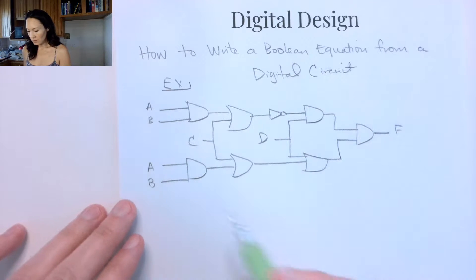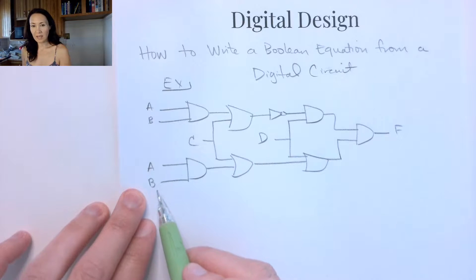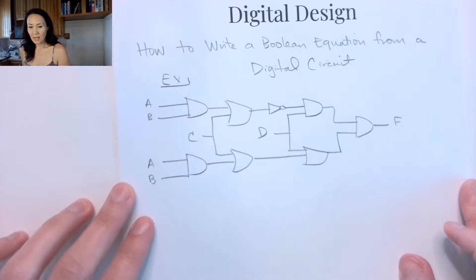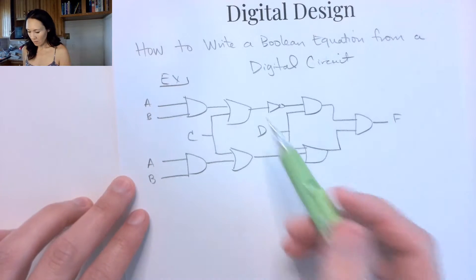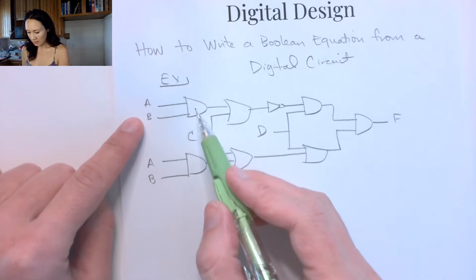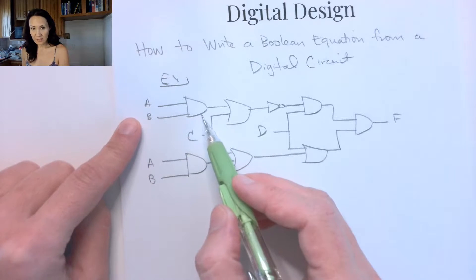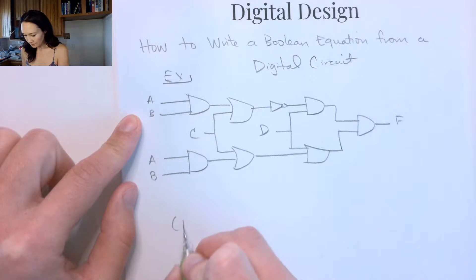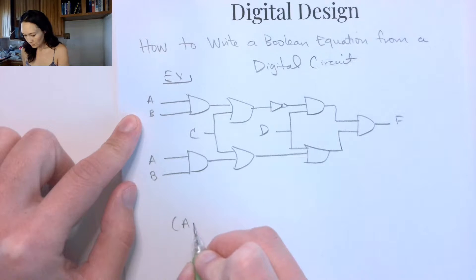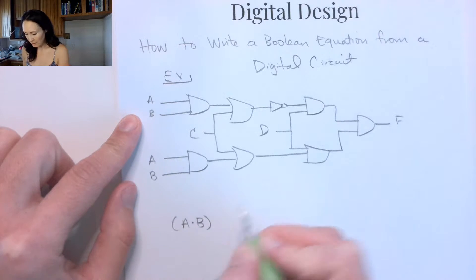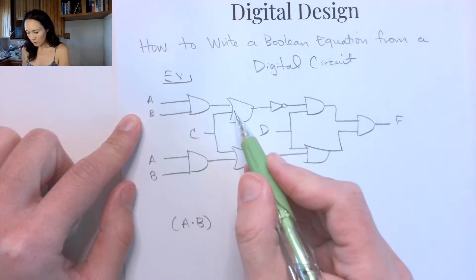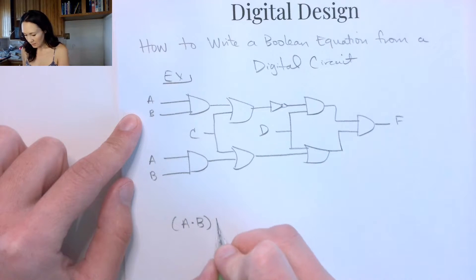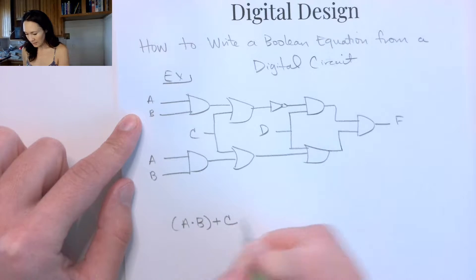To do this, I'm going to start on the left-hand side and work my way towards the right. I'll start with this first gate here — this is an AND gate. I have A and B ANDed together. That result is getting OR'd with C.